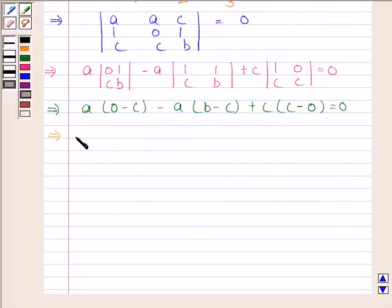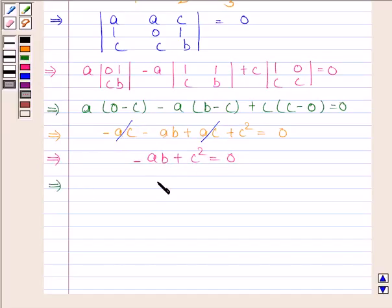Now, plus ac and minus ac cancels out. So we are left with minus ab plus c squared equals zero. And this implies c squared is equal to ab.